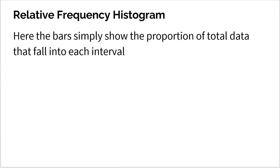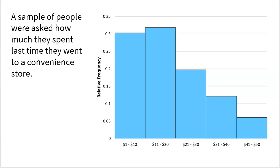We can also make a relative frequency histogram. Instead of bar height showing counts, it shows the proportion of total data that fall into that bin — same idea as relative bar graphs for categorical data. Here's an example where we asked people how much money they spent the last time they went to a convenience store. Bins go by $10: one to 10, then 11 to 20, and so on. The bins are all equal in size, and the y-axis shows relative frequency — so 30% of customers spent $1 to $10.